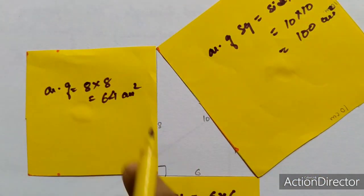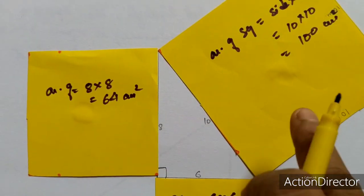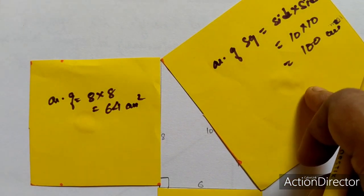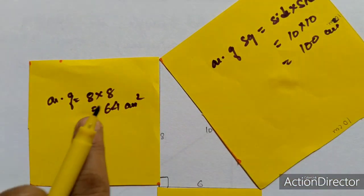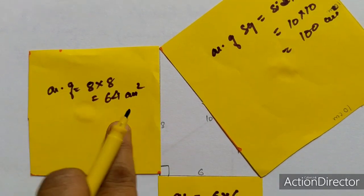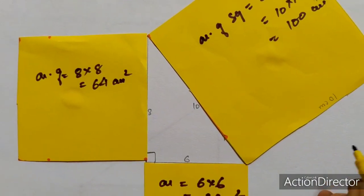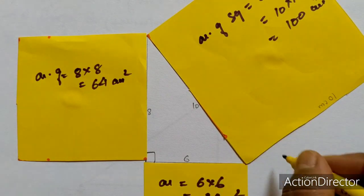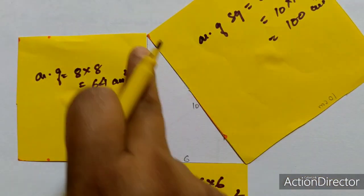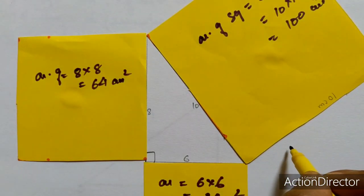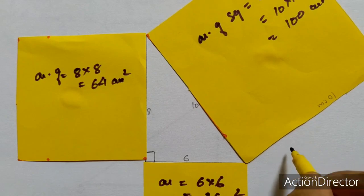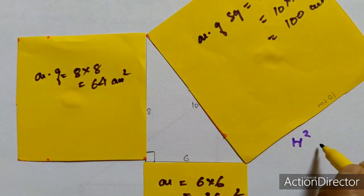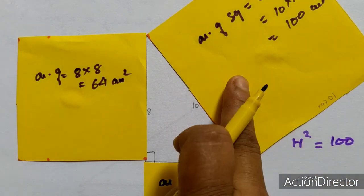After getting the area of all 3 pieces, we are going to check whether the hypotenuse square — that means the area of this piece — is equal to the sum of the areas of these 2 pieces or not. So here I will write: area of the biggest piece, where the longest side was 10 cm, so we are going to write the area of the hypotenuse square, which is 100.